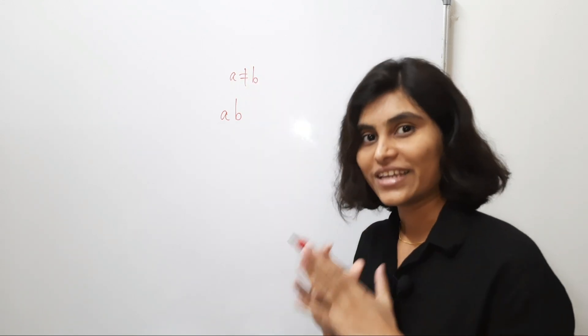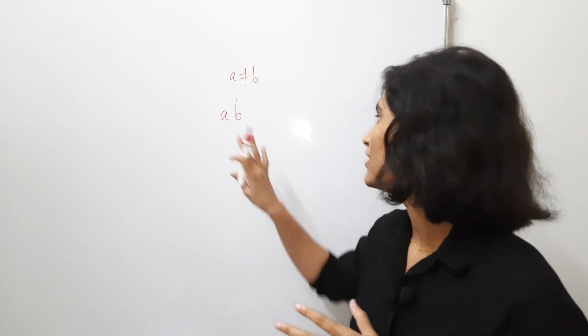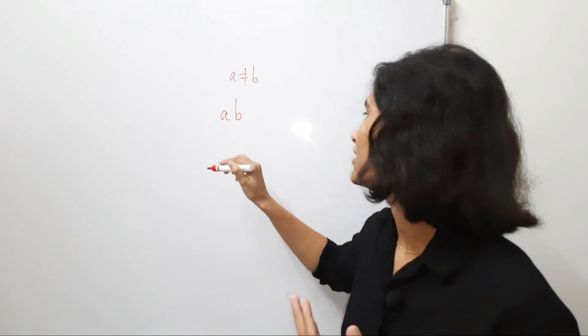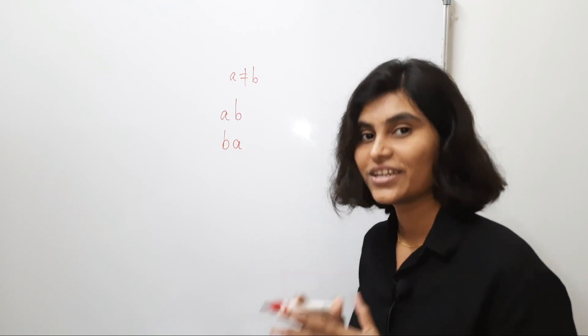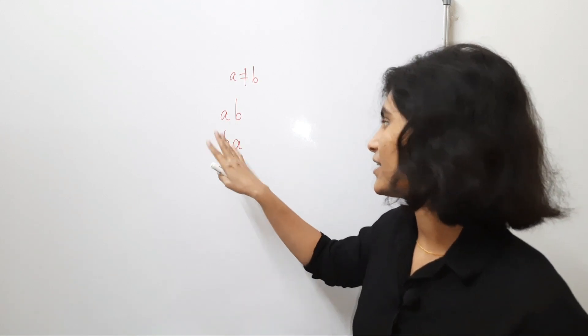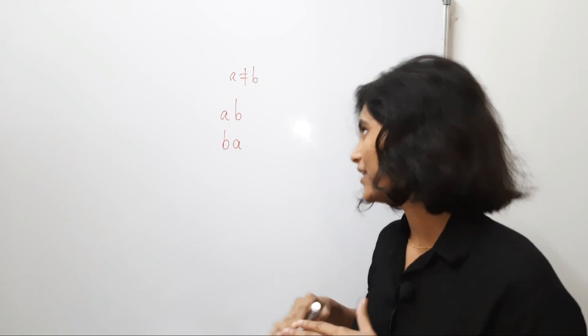Now, in the second step, we have taken the reverse of this number. That means it is BA, right? And in the third step, we are taking the difference. But for that,